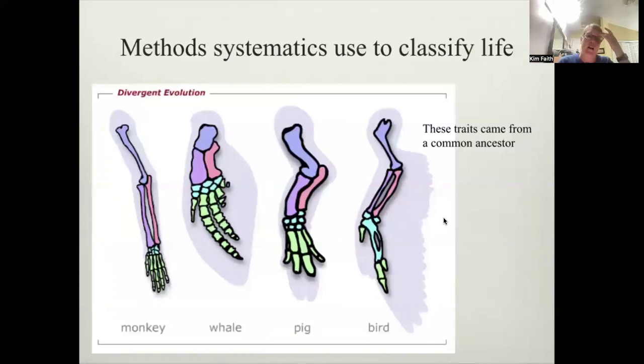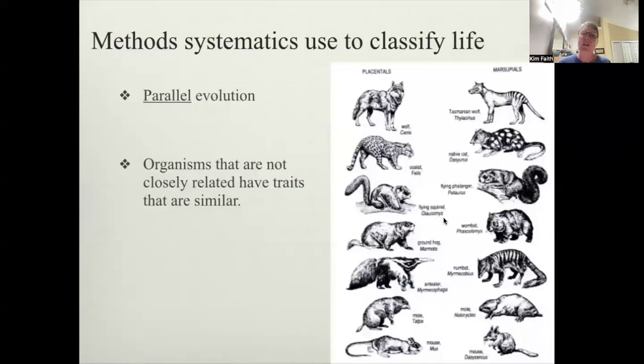So systematics methods that systematics use to classify life. Again, we're looking at divergent. Divergent is where they came from a common ancestor, but they've changed over time. They have diversified. And those are those homologous structures here that we've been looking at over and over again.